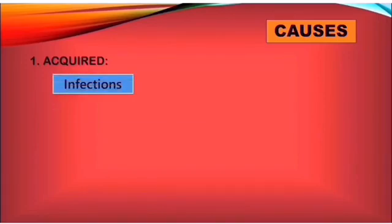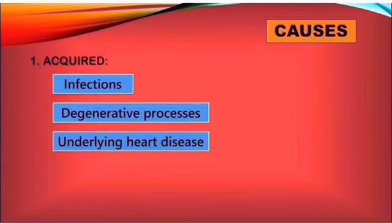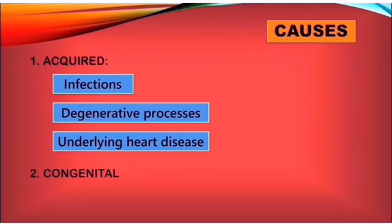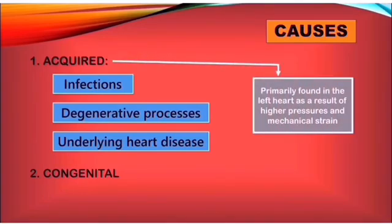In terms of causes, valvular defects can be acquired as a result of infection, degenerative processes, or underlying heart disease, or they can be congenital — most often as part of congenital syndromes like the tetralogy of Fallot, which includes a pulmonary valve stenosis. Acquired defects are primarily found in the left heart as a result of the higher pressures and higher mechanical strain.